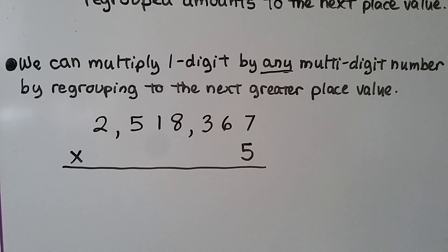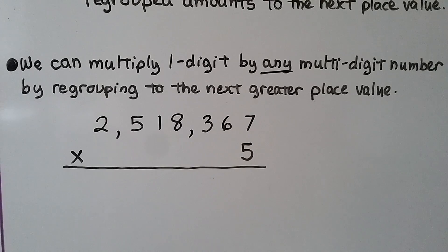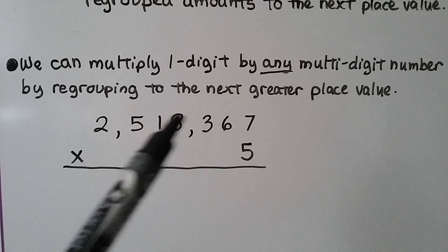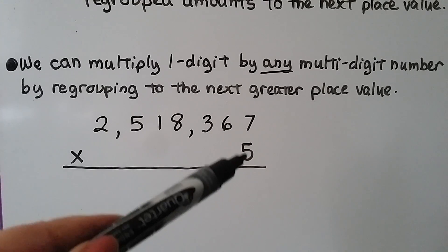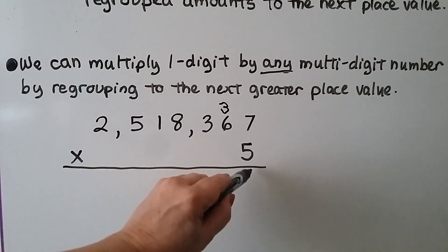We can multiply one digit by any multi-digit number by regrouping to the next greater place value — we could even multiply into the quadrillions. Here we have 2,518,367. We would just regroup to the next greater place value and write our amounts into the product, just as we did when multiplying one digit by two, three, or four digits. We start with the ones place. Five times seven is 35 — we regroup the three, put the five down.